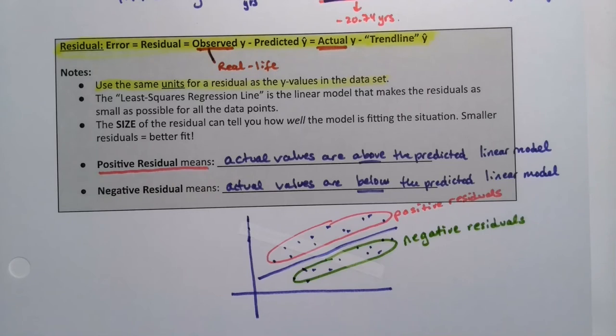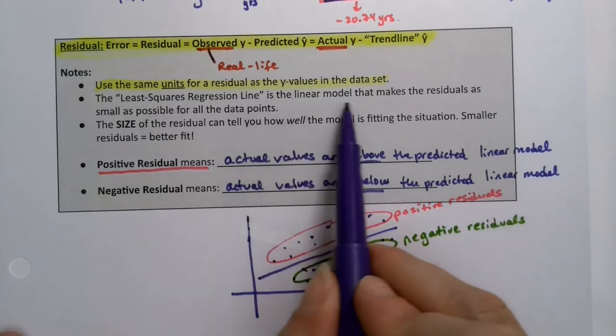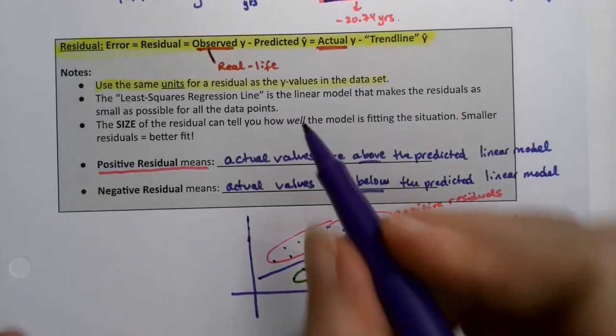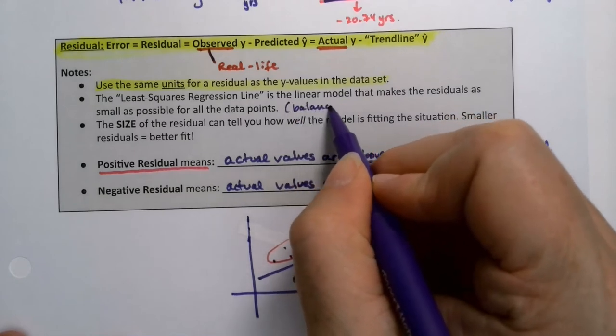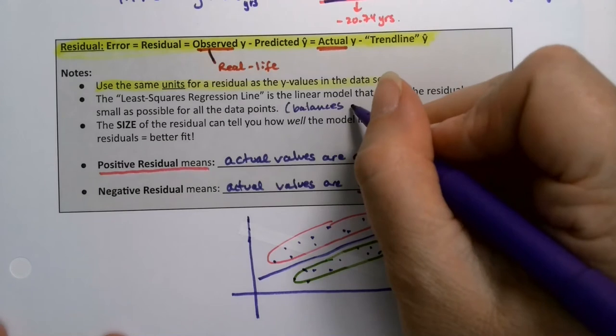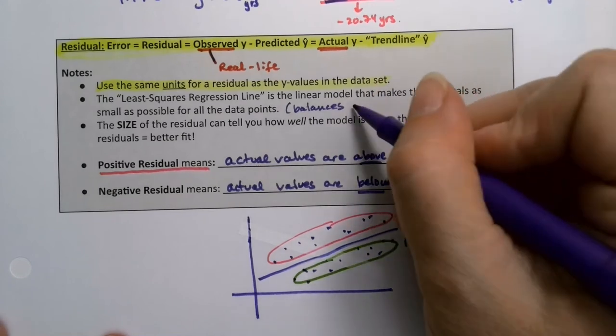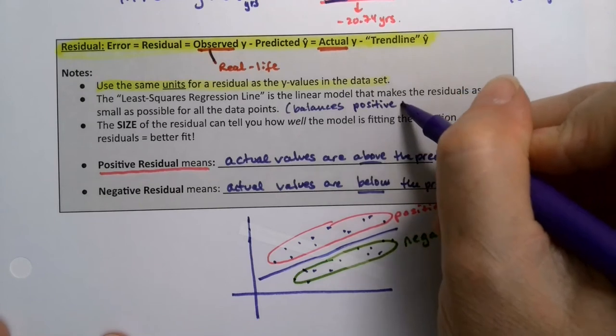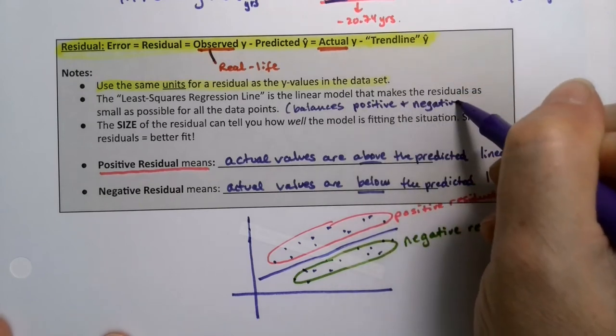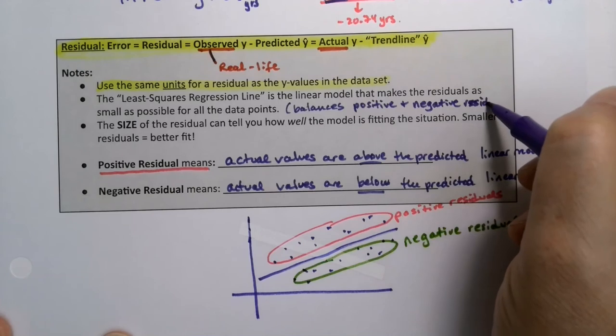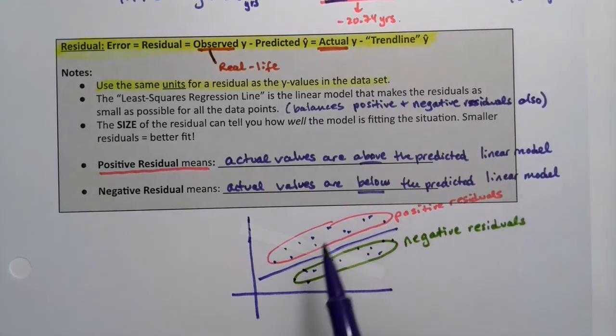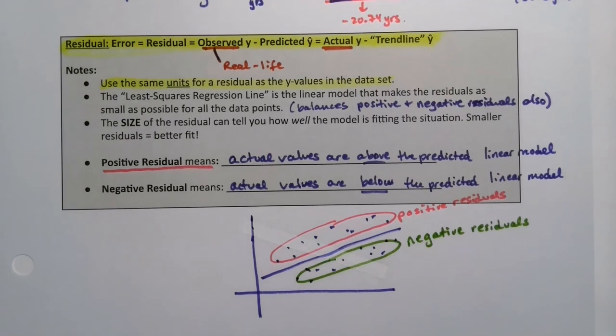which means the least squares regression model is balancing out those two types. And that's what this is saying. The least squares regression model is the model that makes those residuals as small as they can be, and it balances the positive and negative residuals. Now, it's not exactly 50-50. It doesn't quite work like that, but it's along those lines. So it balances the positive and negative residuals also. It's just the nature of the calculation. Again, it's not that 50% are at 50%. It's not quite like that, but it's close-ish. It shouldn't be like 70 and 30. That's not going to happen.